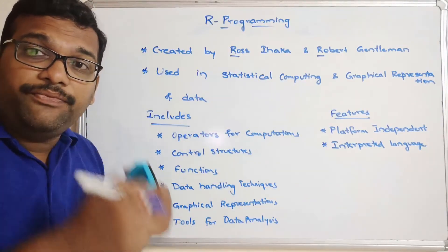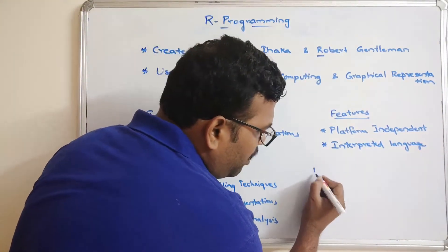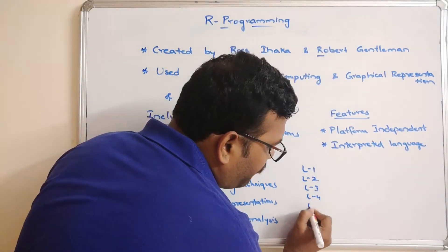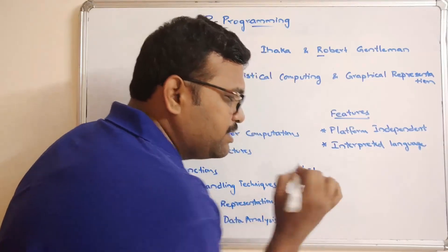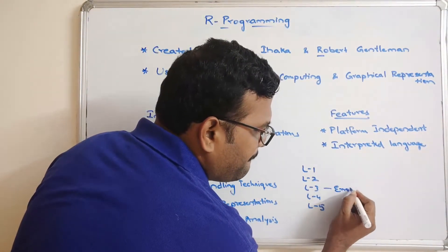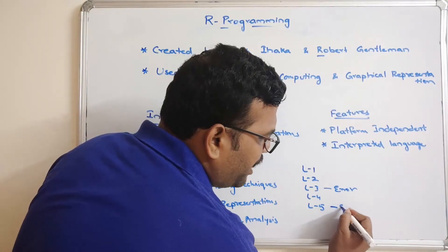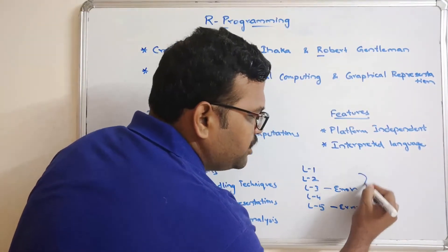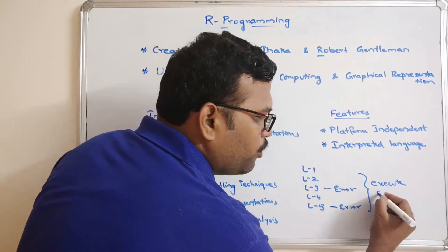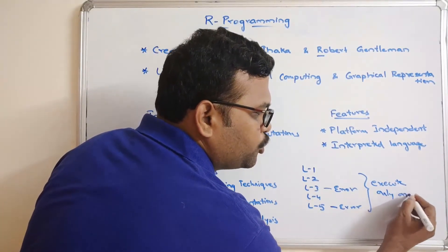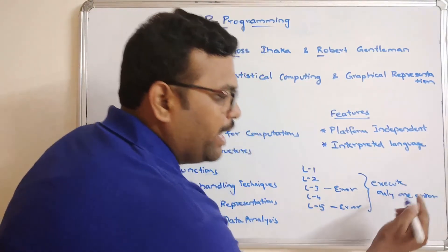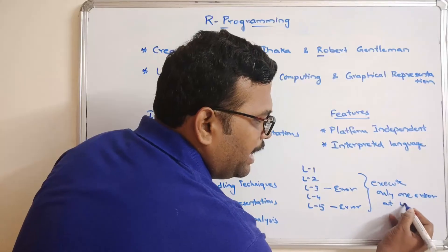That means, if a program is having some five lines, L1, L2, L3, L4 and L5, and if you are having some errors in line 3 and L5, once you execute this program, you will get only one error. It doesn't show both the errors. It will show only one error at line 3.